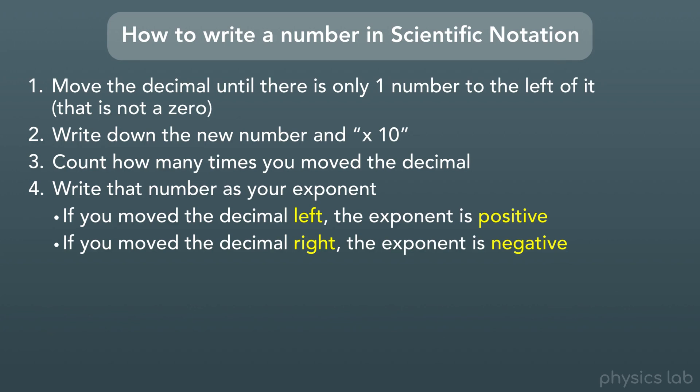And let's try one example going the other way. Let's use this number, 0.00024. So first, we need to move the decimal point so that there's only one number to the left of it that isn't a zero.